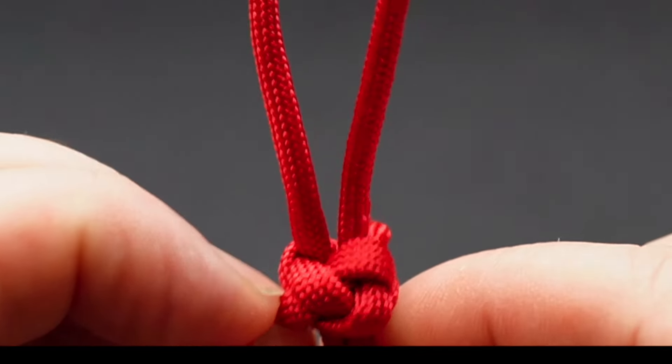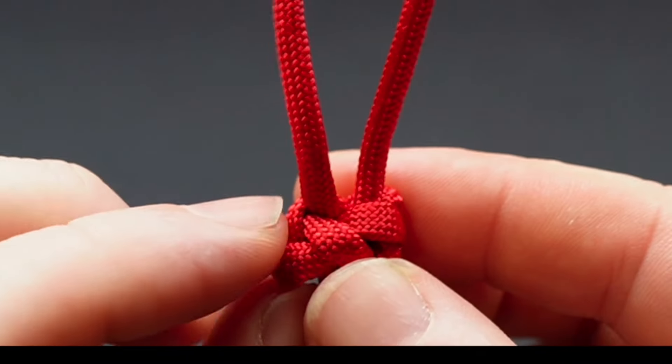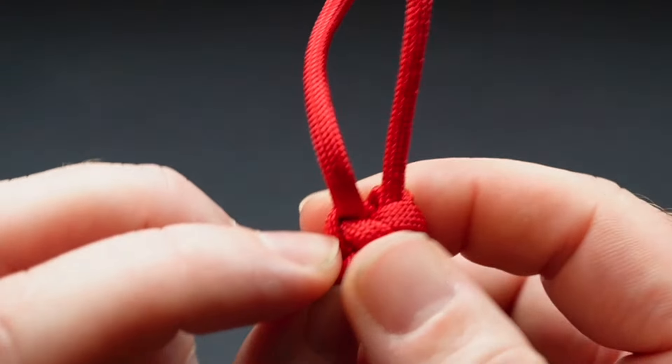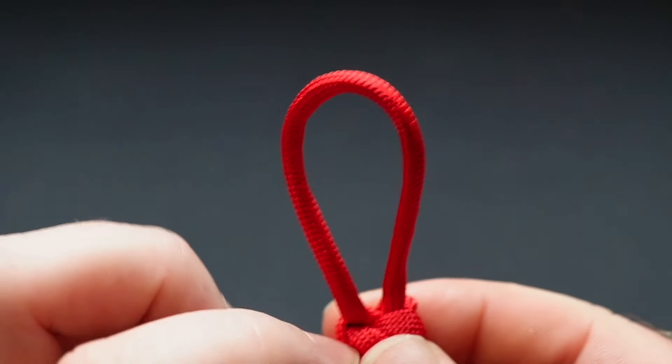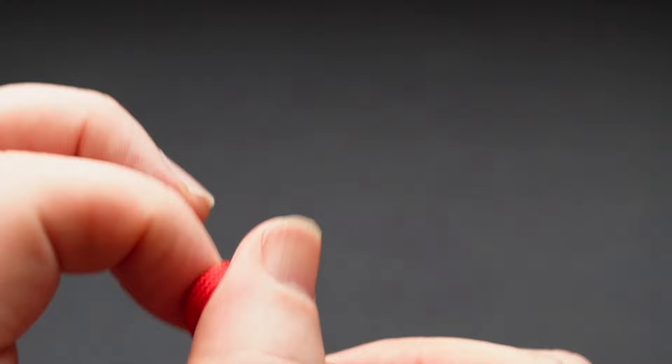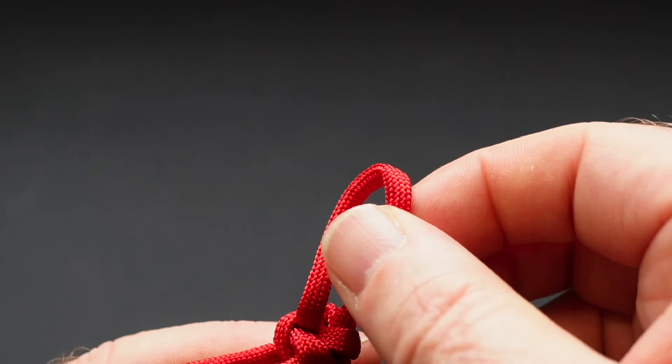And you can see it's reducing that loop like that. You get it down to the size you want, and then pull the slack through the rest of the knot so it goes up.